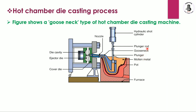The plunger is connected with the plunger rod, and the plunger rod is connected with the hydraulic cylinder. Pressure is generated by the hydraulic cylinder and transmitted through the plunger rod to the plunger. There is also a nozzle connected to a gooseneck. The gooseneck connects to the nozzle, and the nozzle connects to the die casting. Inside the die, one half is a permanent fixed die and the other is a movable die.